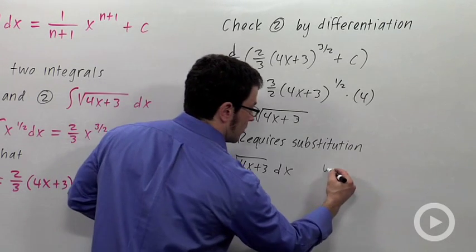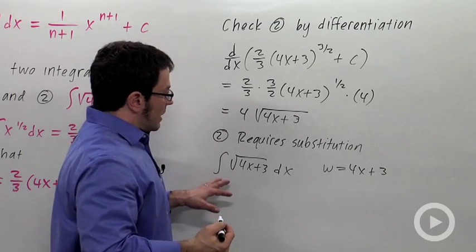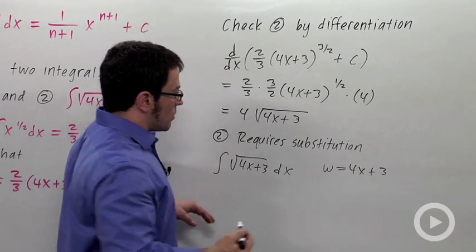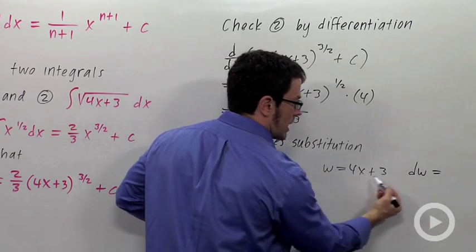So, w equals 4x plus 3. And I want to calculate a dw. So, the dw is going to be 4 times dx.